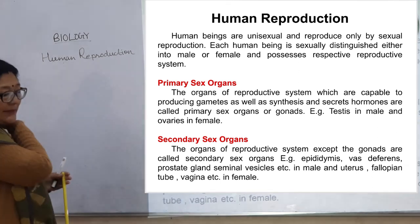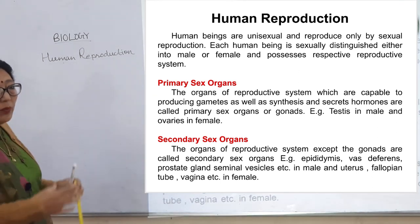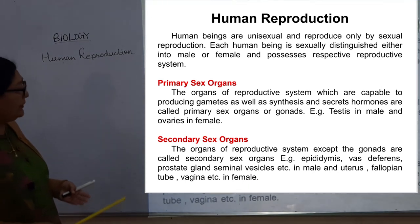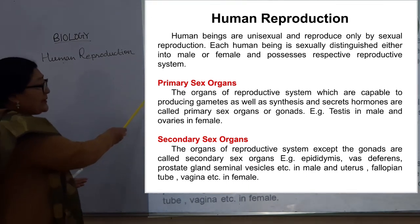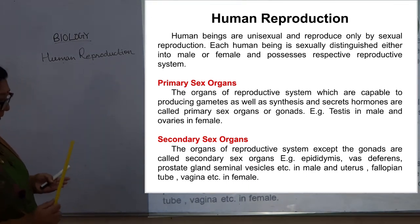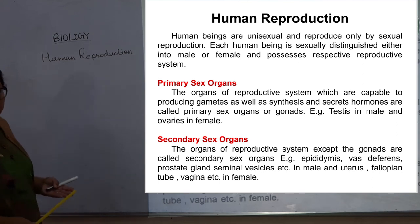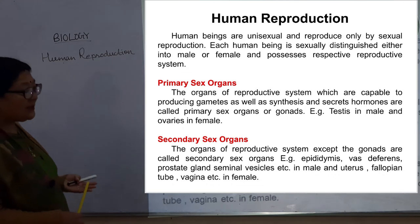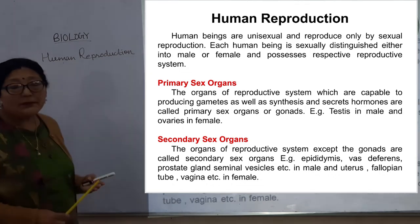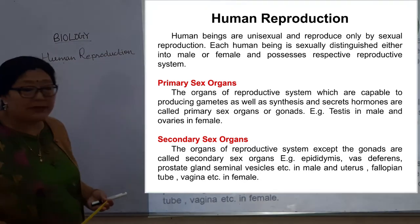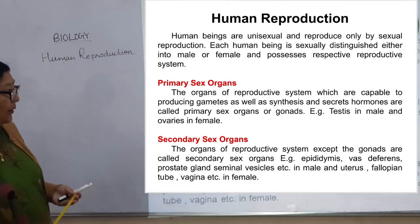In females, ovary is a primary sex organ. The female secondary sex organs include ovary, uterus, fallopian tube — which is also called oviduct — and vagina.